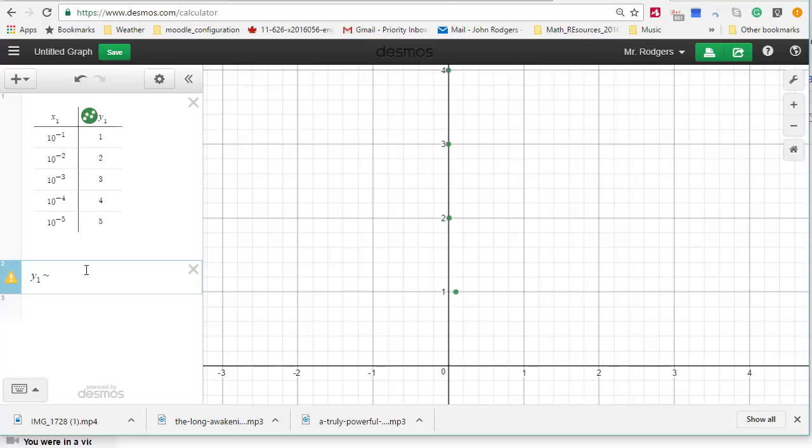I'm going to see if I can get Desmos to fit this as a logarithmic relationship. So y1 equals a times log underscore b, because we're trying to figure out what base the log is, whether it's 2, 3, or 10. Then the argument is x.